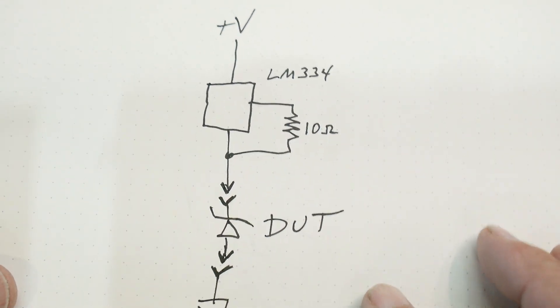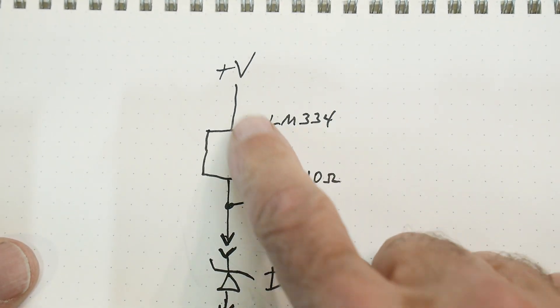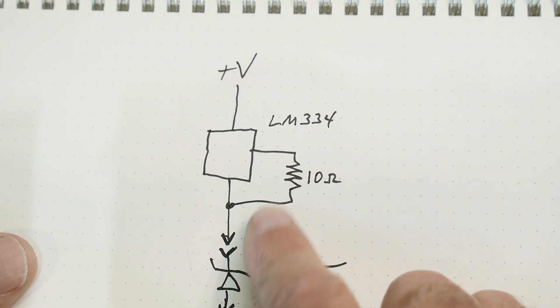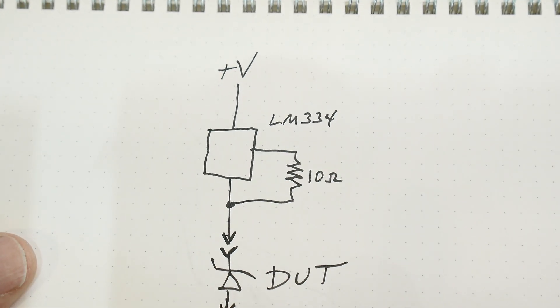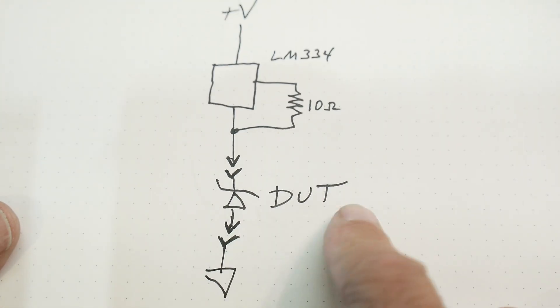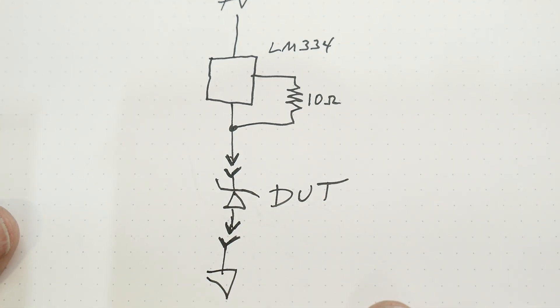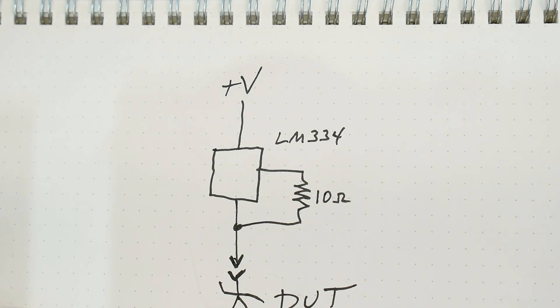And here's the schematic for those who can't imagine it. It's just a 334, 10 ohms going around it. And here's the device under test and there's ground. So yeah, that's all there is to it.